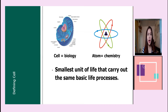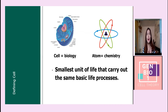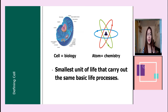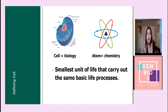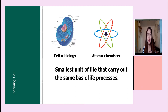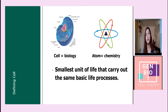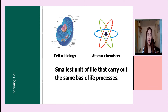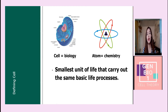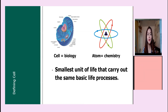When the same types of cells join together, they produce tissue. Tissues working together produce organs, which form organ systems, and organ systems together make up the organism.